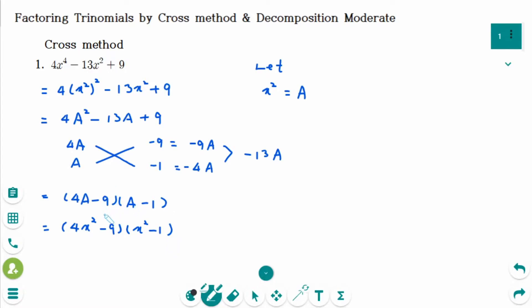And they are a difference of squares. So this is A squared minus B squared form. The first one is 2x squared minus 3 squared. And second one is x squared minus 1 squared.